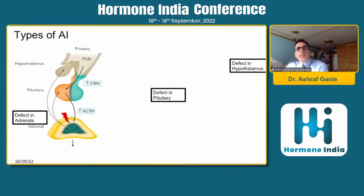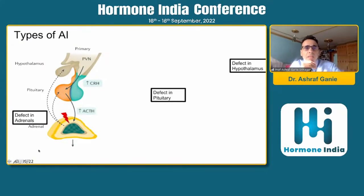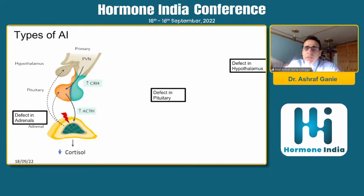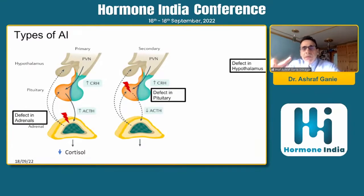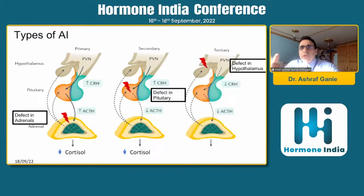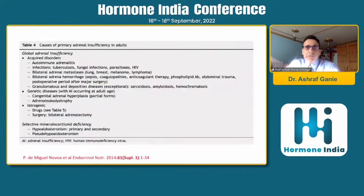Adrenal insufficiency can be a primary disease of the adrenal glands. When feedback is lost, you will have elevated ACTH and CRH, and cortisol secretion will be low. In primary disease, mineralocorticoid and androgens will also be low. However, if the disease is in the pituitary, where ACTH is deficient, then mineralocorticoid and the adrenal androgen component are preserved, and the aldosterone loop remains intact. Similarly in tertiary or hypothalamic disease, cortisol is low but mineralocorticoid is preserved.